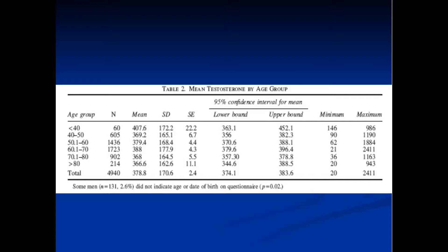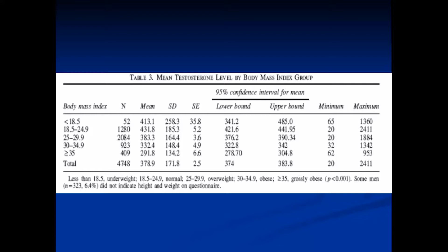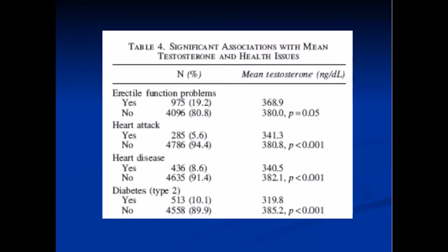Don't pay attention to age alone when deciding whether a patient may have low testosterone. There is a very strong association between body mass index and testosterone. Men in the lowest BMI groups have the highest T — BMI 18 to 24 (normal) averaged 432. But above 35 (very obese), the average T level dropped to 290. That's over a 100-point difference in testosterone based on body mass index alone.